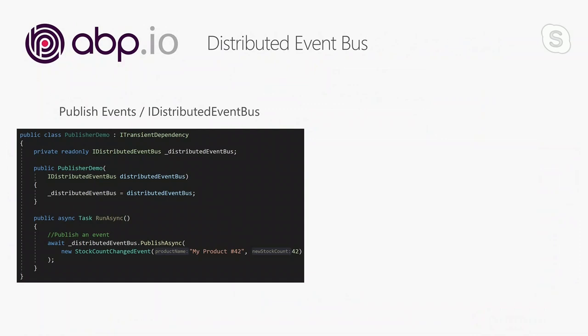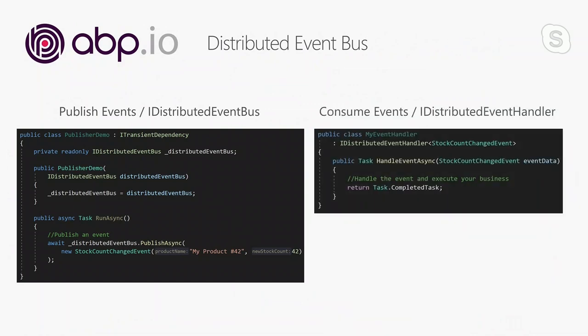ABP provides a distributed event bus out of the box. Publishing an event is pretty easy — just inject the IDistributedEventBus service and use the Publish method. Subscribing and consuming an event is also easy — just implement the IDistributedEventHandler interface and fill in the HandleEvent method. The rest of the communication and retry mechanisms are handled by the ABP framework. It's integrated with RabbitMQ as the first implementation, and more options will be added in the future.